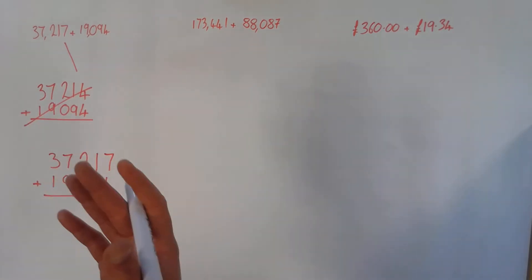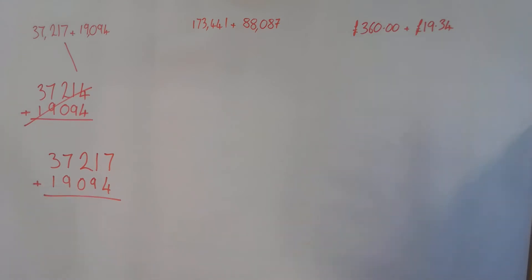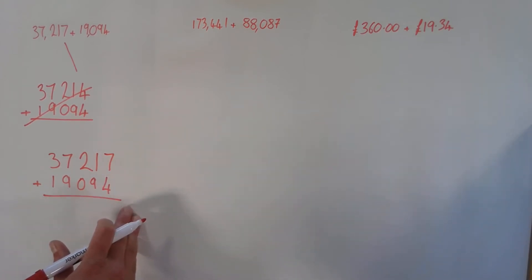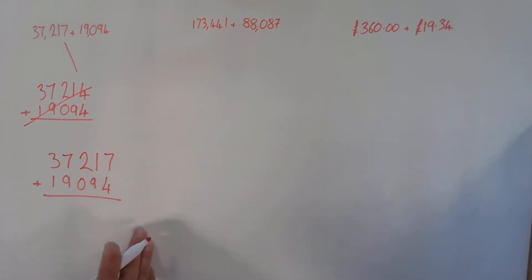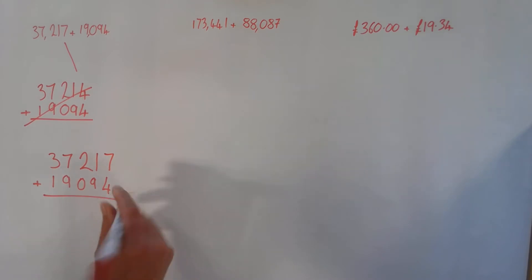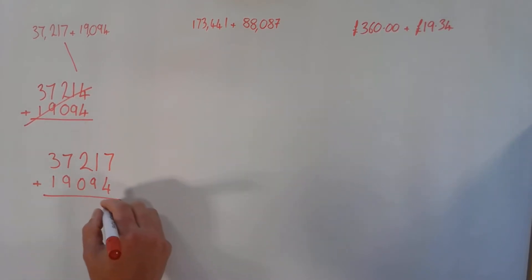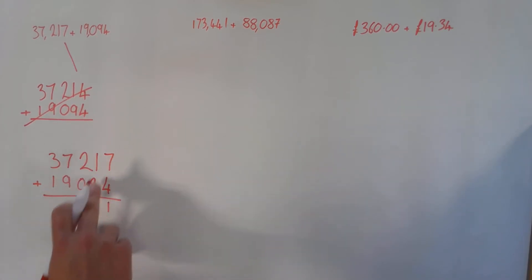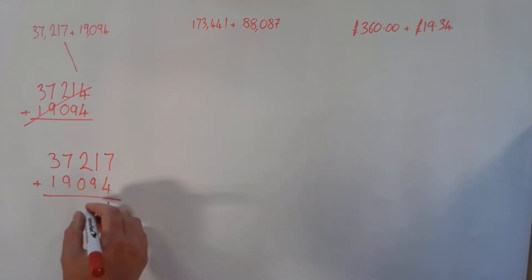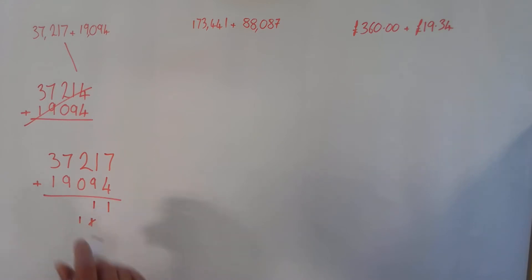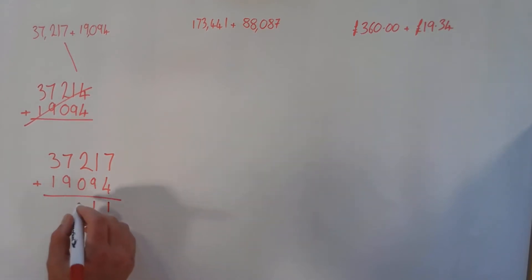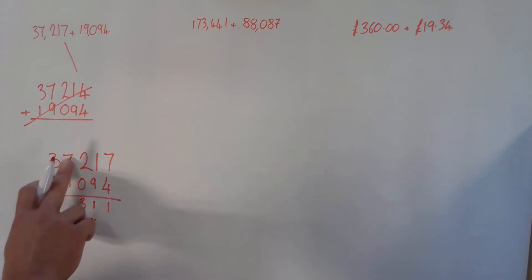I'm going to work right to left, starting with the digits of the least value first, and build that up in case I need to do any carrying. I start with seven added to four, which gives me 11. I can't put 11 in one column, so I put the one in the ones place and carry the ten into the next column. Adding my tens: one ten plus nine tens plus one ten gives me eleven tens — so I put the one down and carry one into the hundreds column. Then two hundreds plus zero hundreds plus one hundred gives me three hundreds.